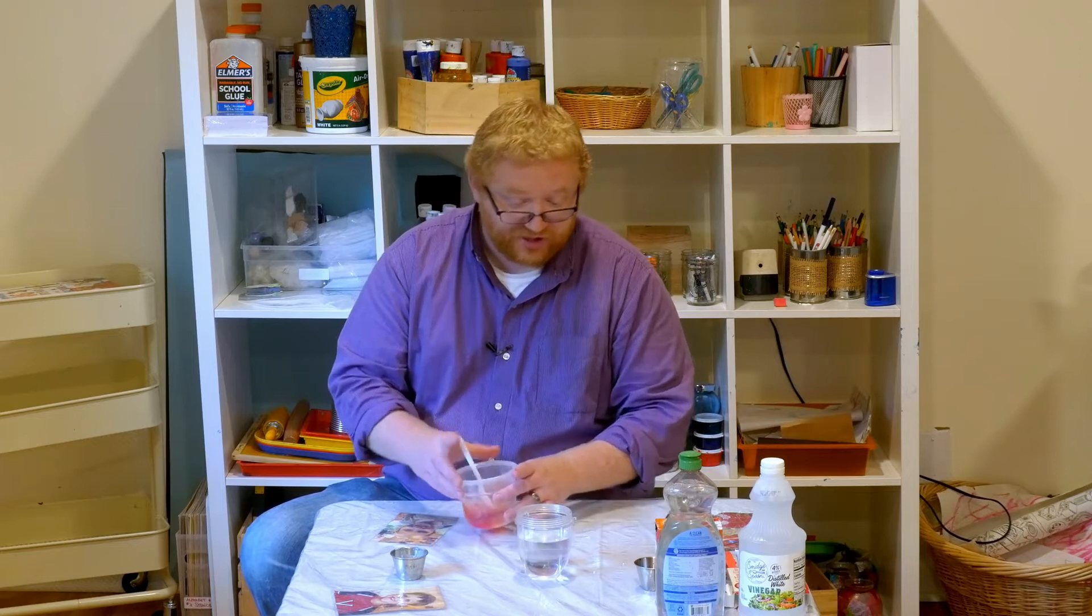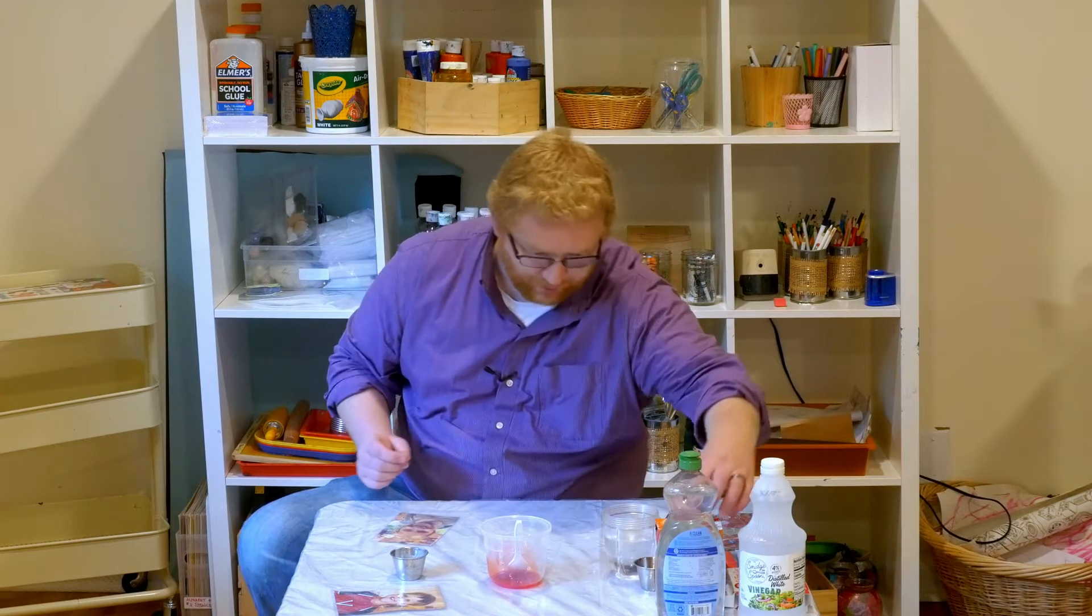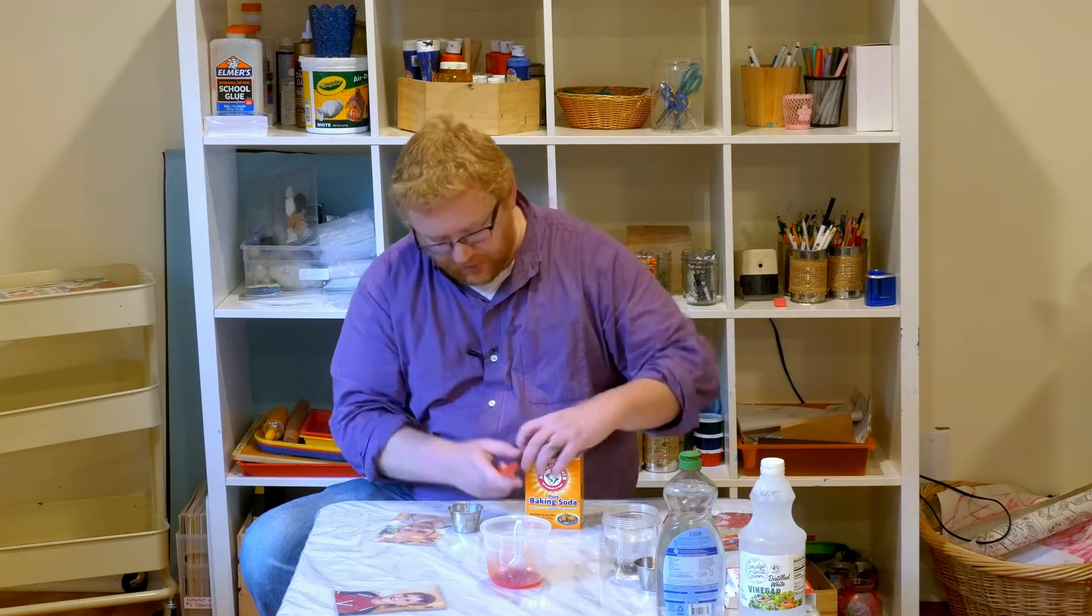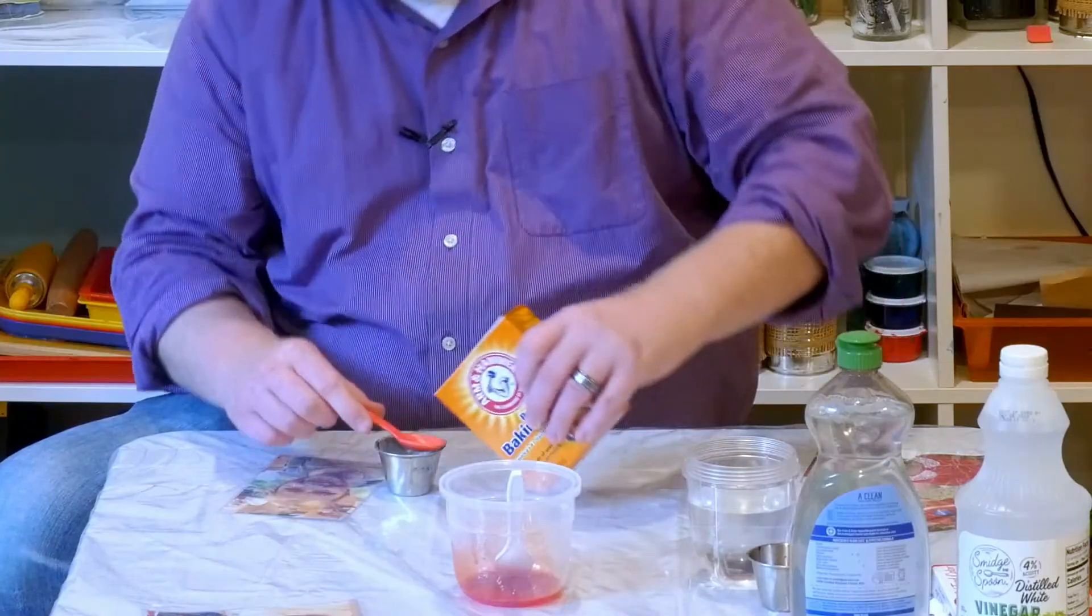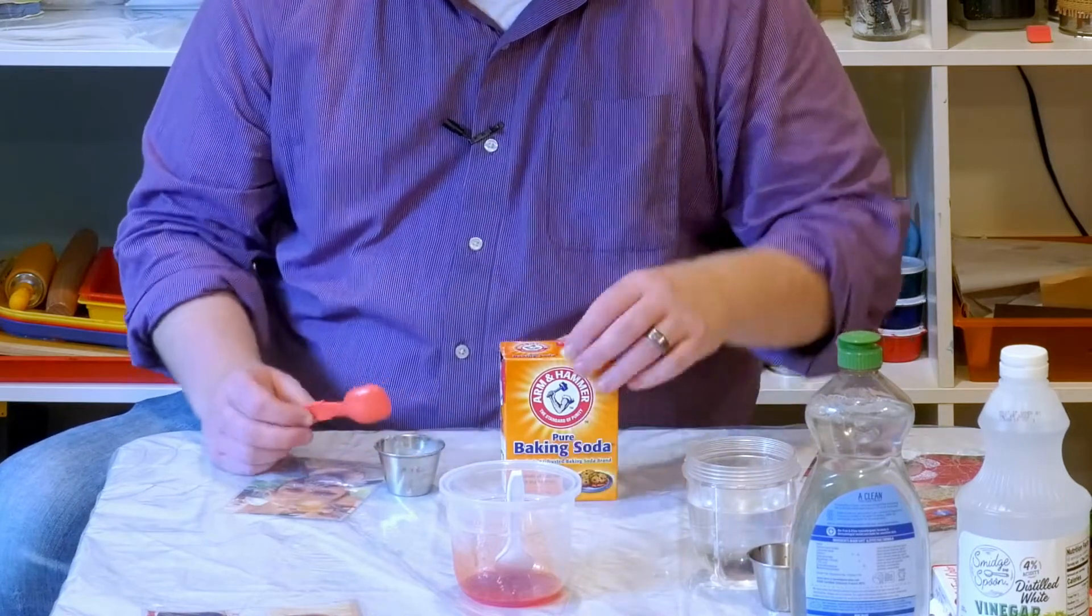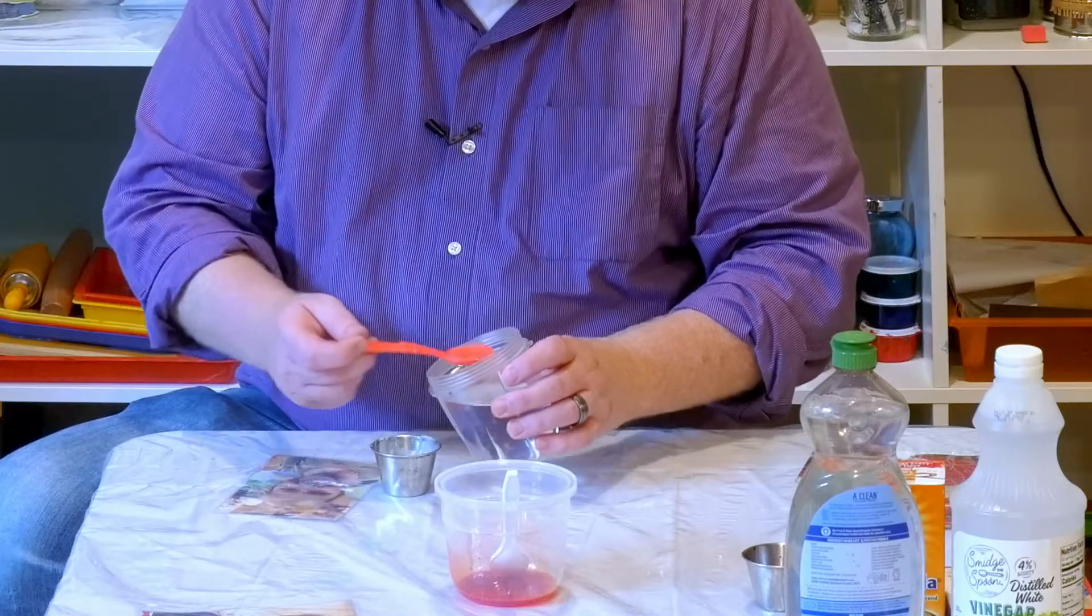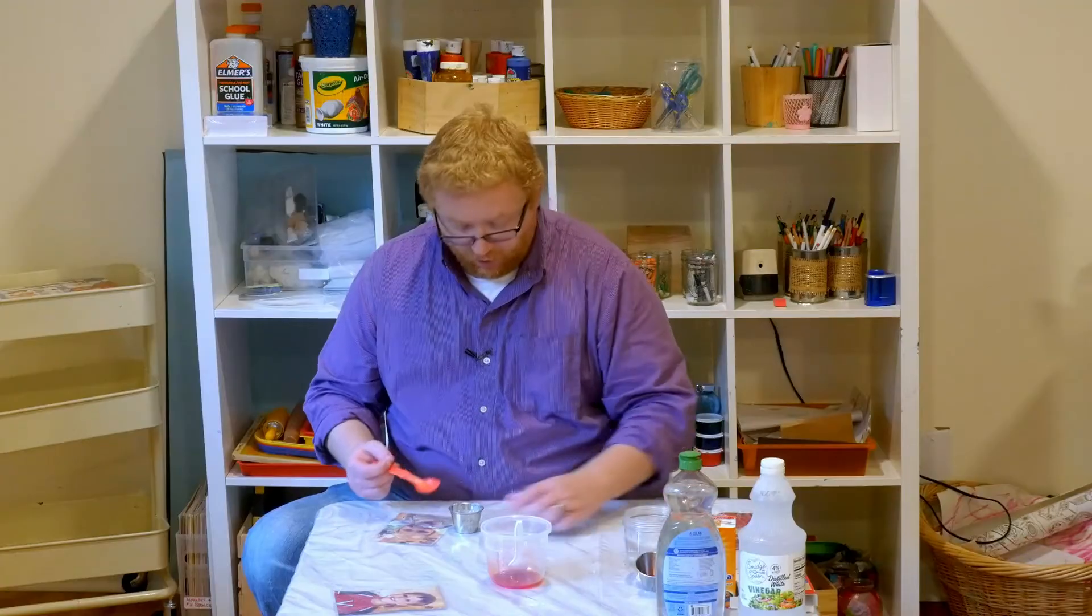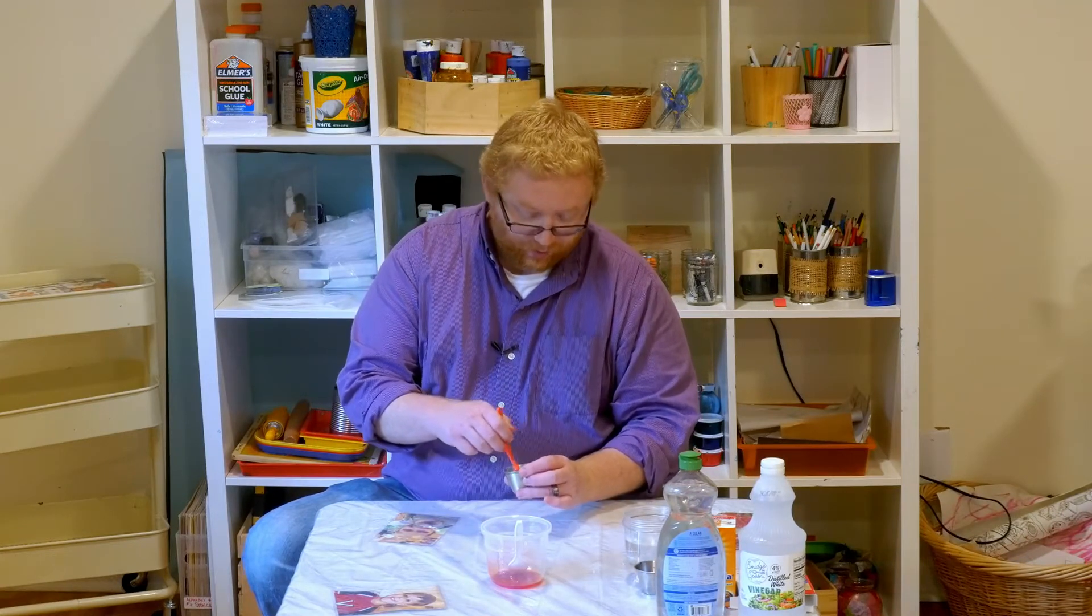So I really stirred that, and now we're going to move on to our next solution, solution B, and that is one tablespoon of baking soda. And again, you're going to see me not really be exact here—that's one tablespoon of baking soda—and then it's going to be one tablespoon of water. So we're going to do the one tablespoon of water, and I'm going to give that a little bit of stir so they can get all mixed in.